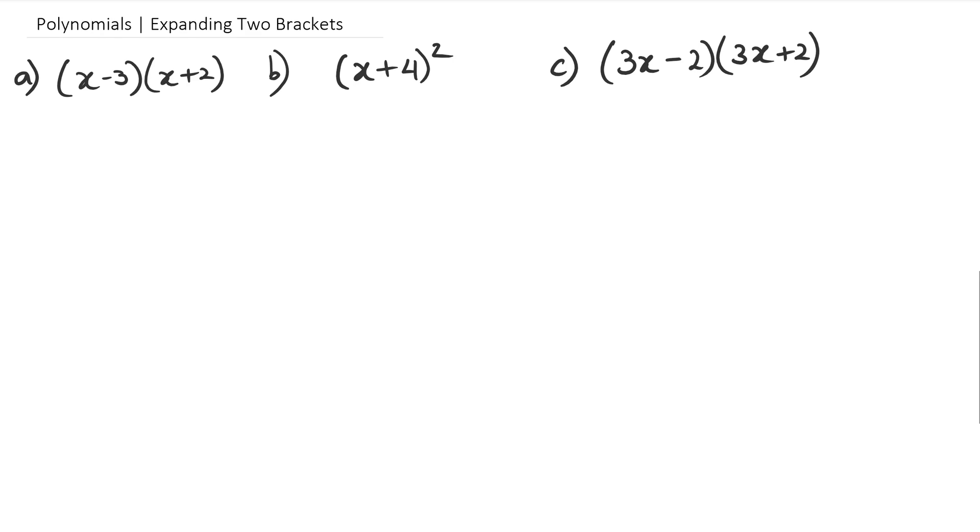Basically using the FOIL method. There are so many different ways of doing this guys, I'm just going to stick with the one that I prefer working where this is basically x times x which is x squared, and then x times 2 which is 2x, negative 3 times x which is negative 3x, and negative 3 times 2 which happens to be negative 6. Simplifying this, I've got x squared, and because we have 2x and negative 3x as like terms, this will become x squared minus x minus 6.